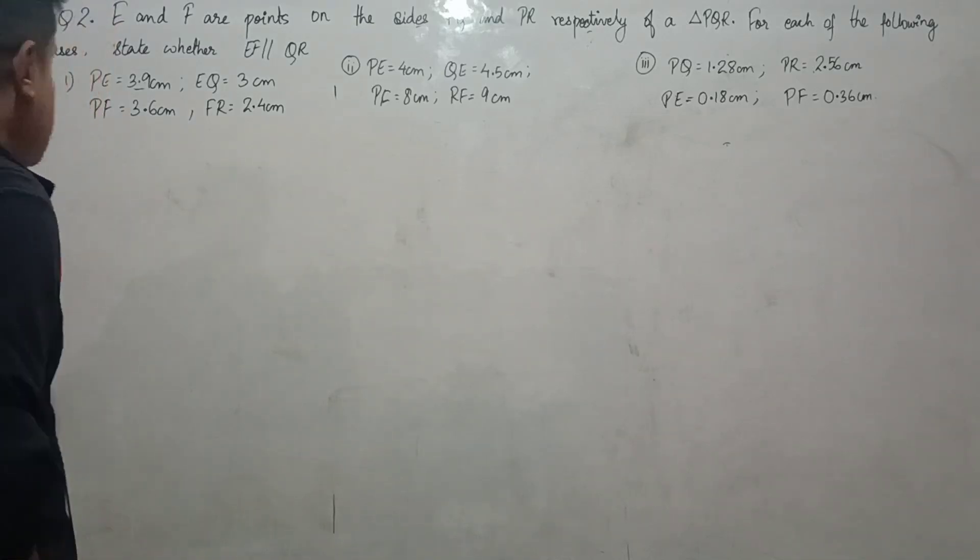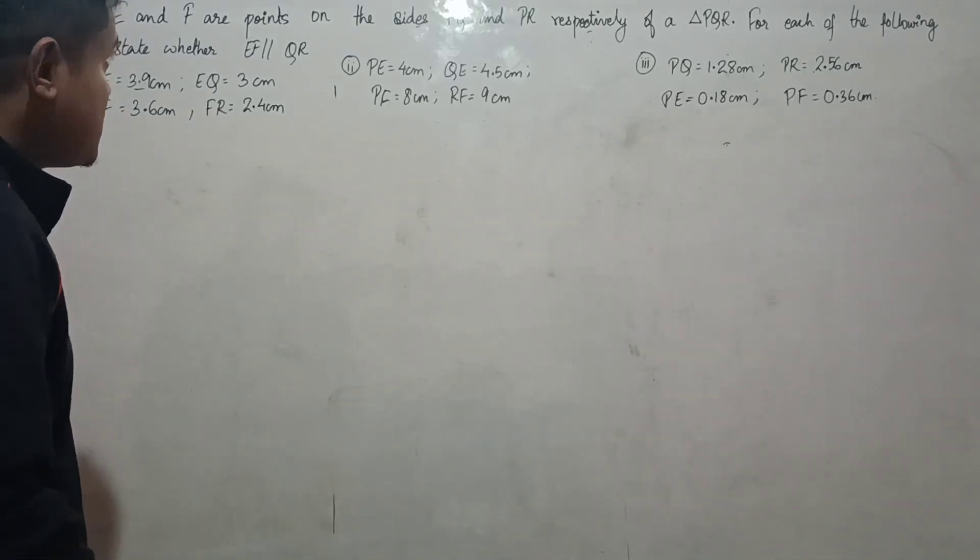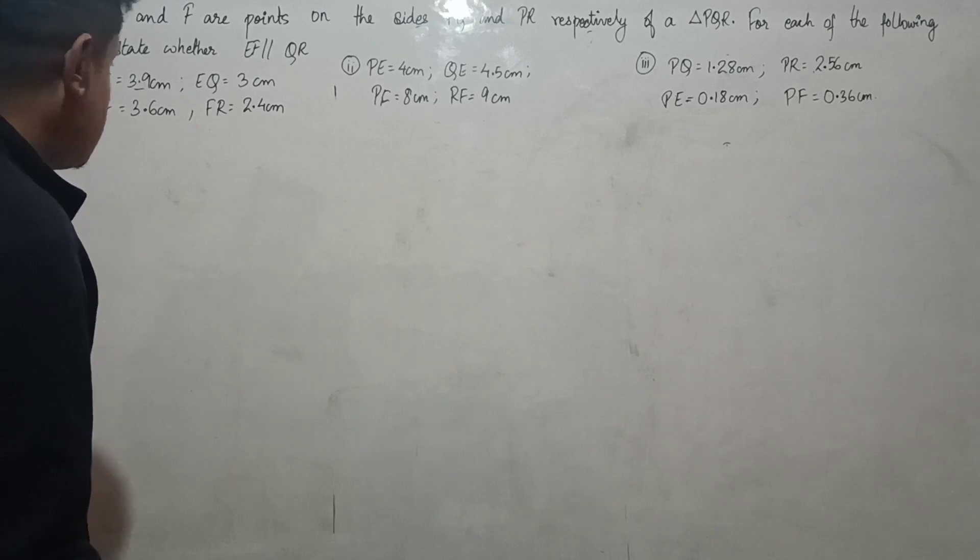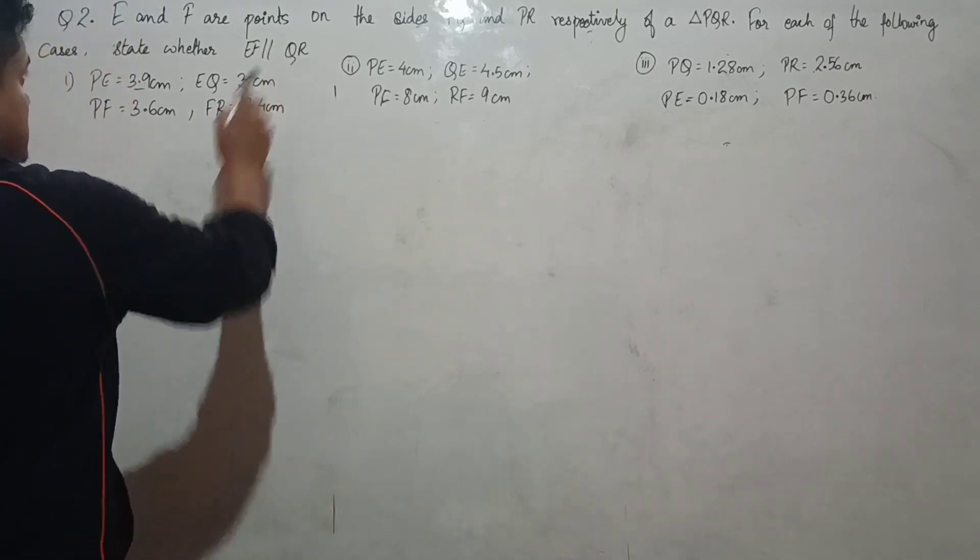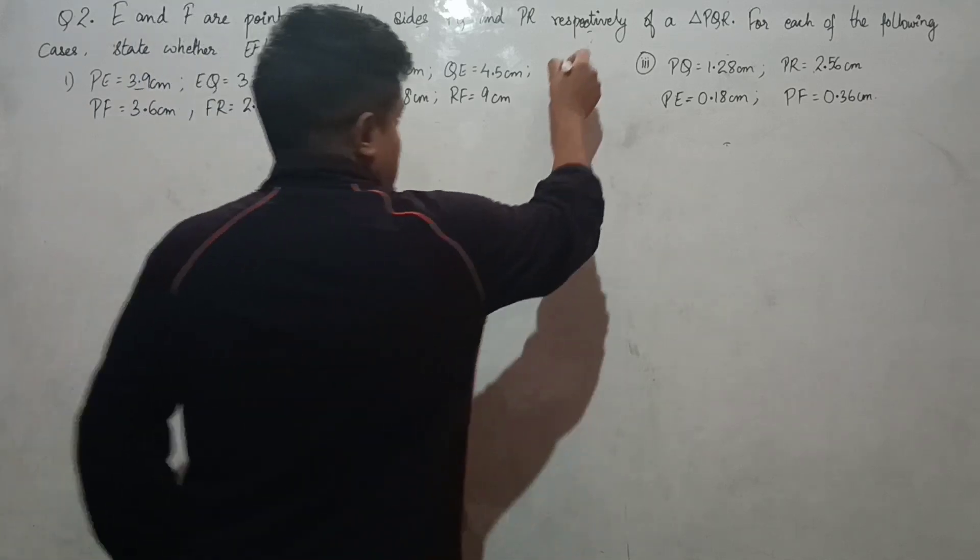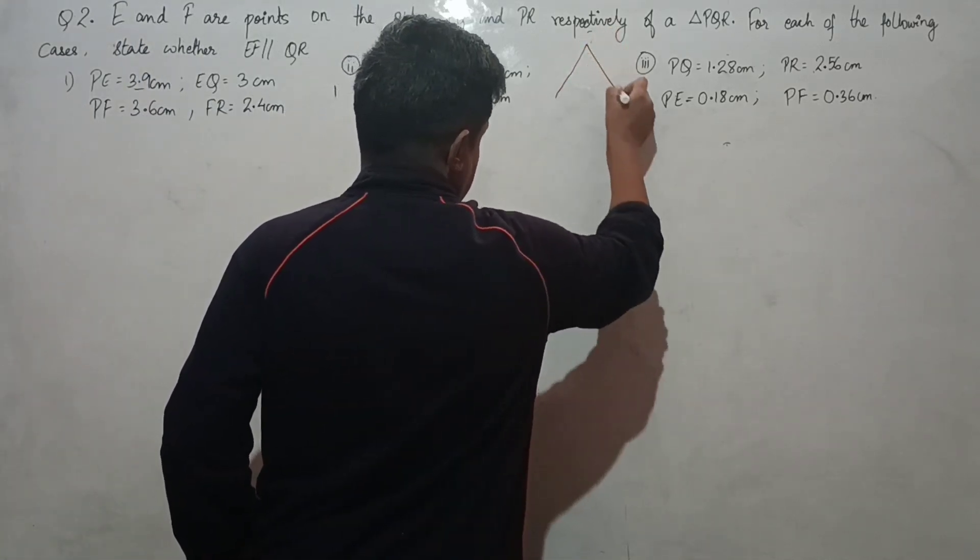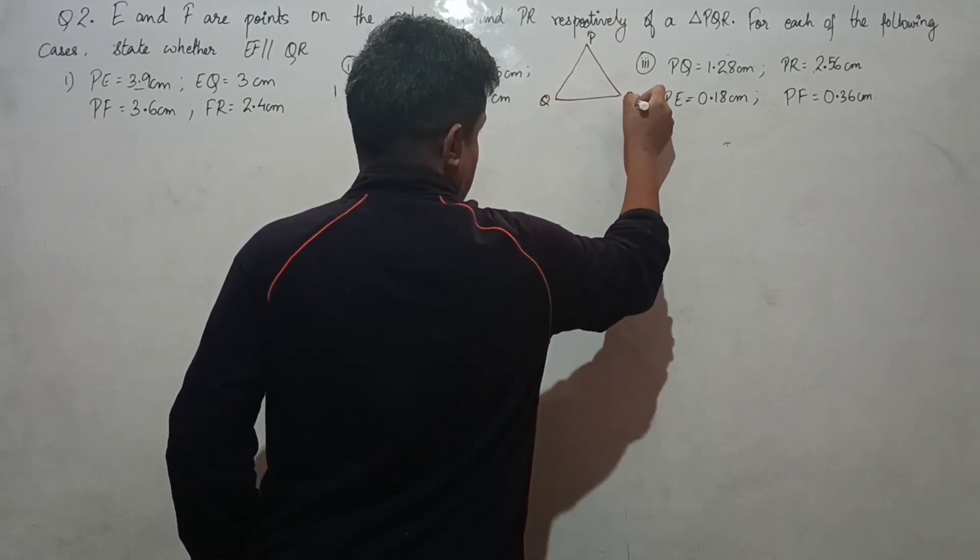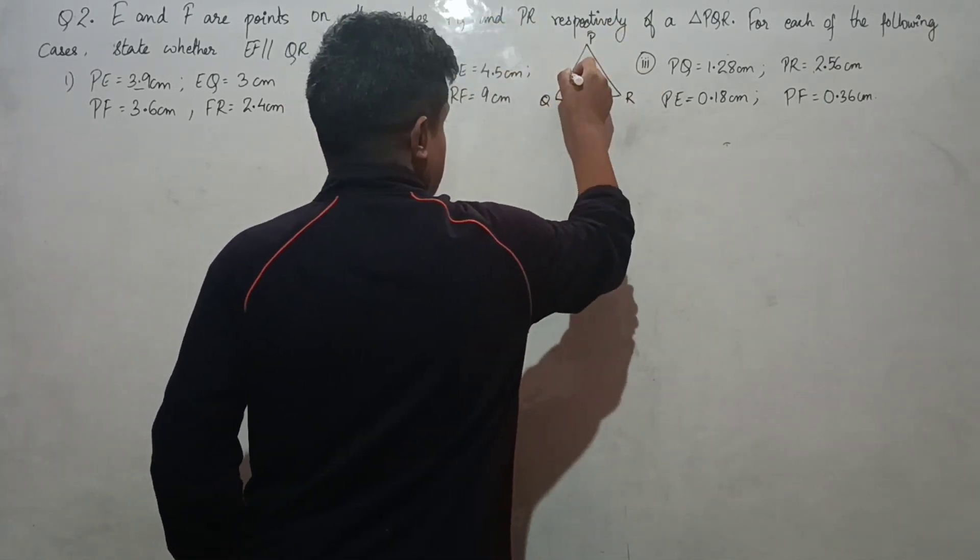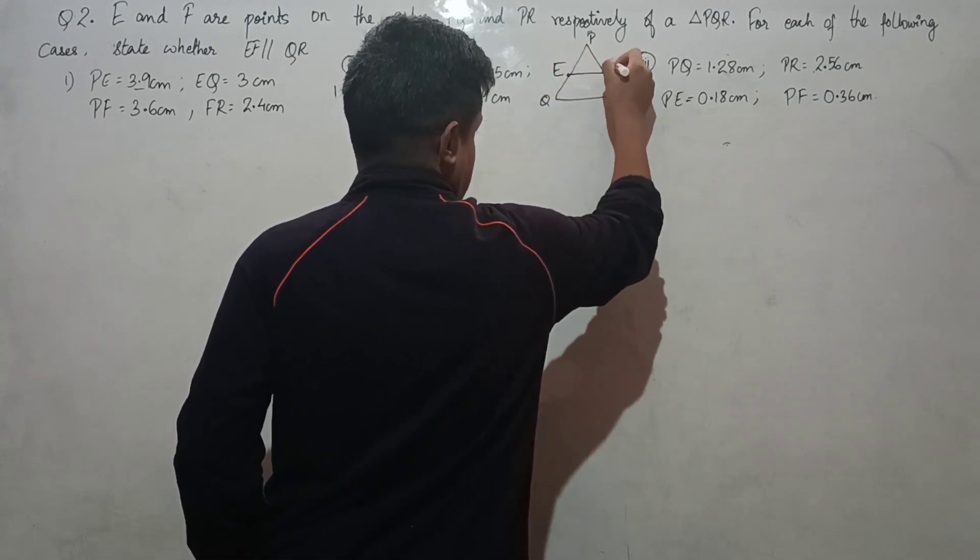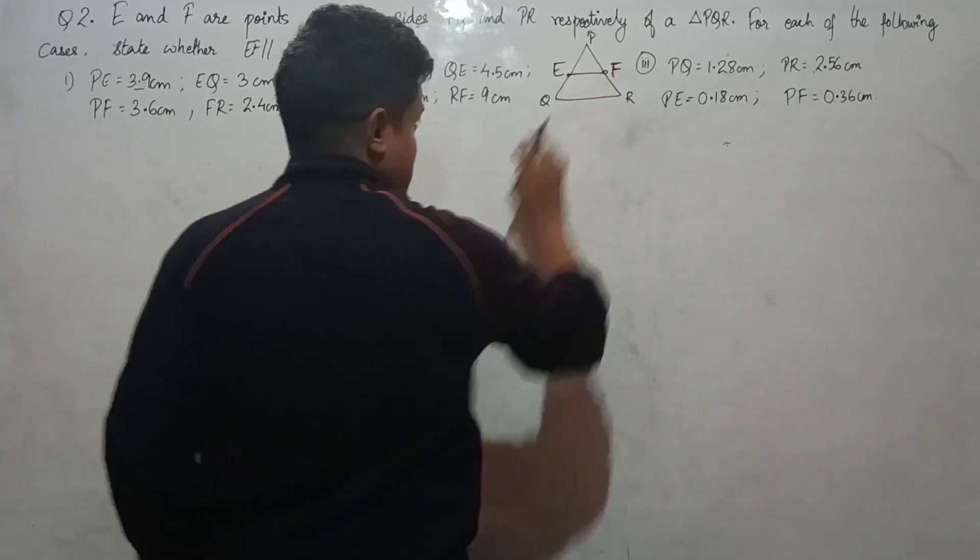Question number two: E and F are points on the sides PQ and PR respectively of a triangle PQR. For each of the following cases, state whether EF is parallel to QR. Let us make a rough diagram of triangle PQR, with E on PQ and F on PR, to check if EF is parallel to QR.